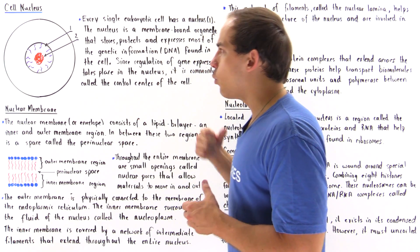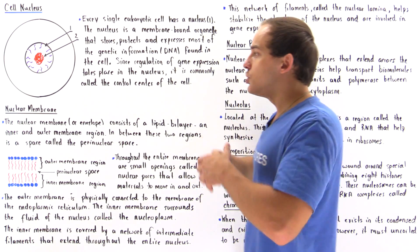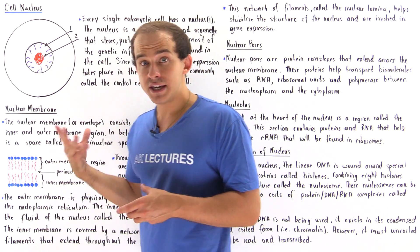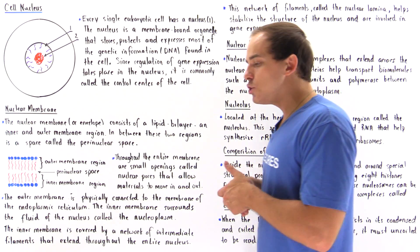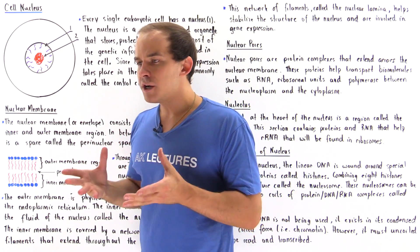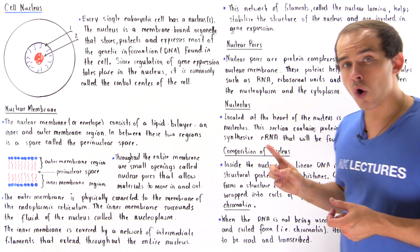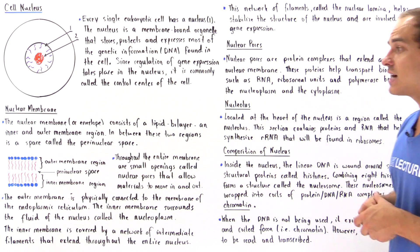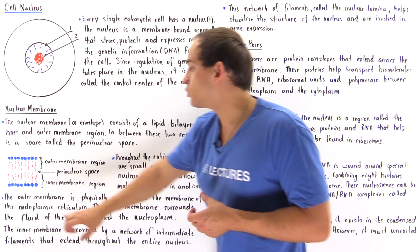Now let's return to what a nuclear pore is. Earlier we said that the entire nuclear membrane contains these holes known as nuclear pores. But what exactly is a nuclear pore? A nuclear pore is not exactly an empty hole. Nuclear pores are actually protein complexes that extend throughout the entire nuclear membrane.